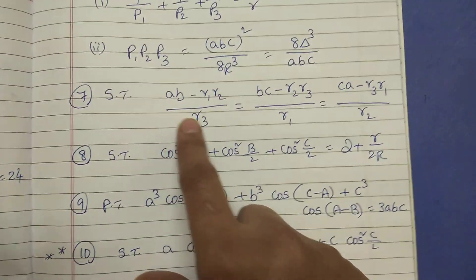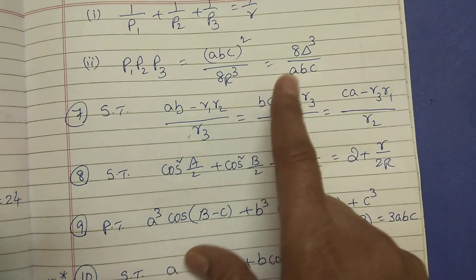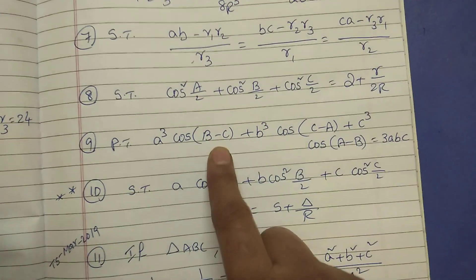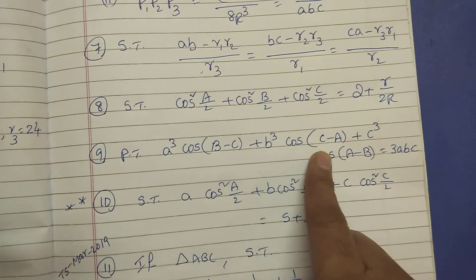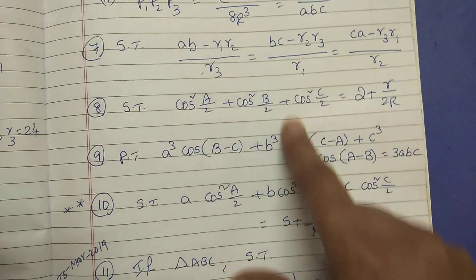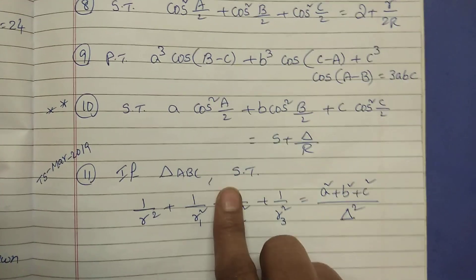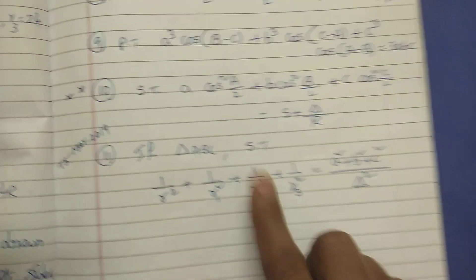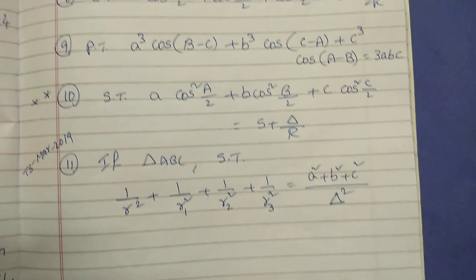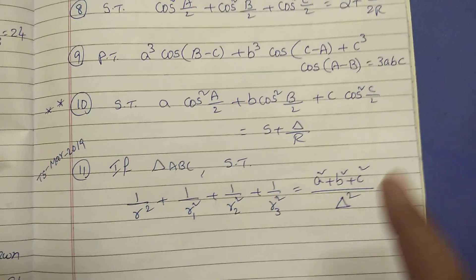Next, seventh one — you have to do that. If you have a 10th grade you can check. This is 2nd grade, you can check. 1 by R1 squared plus 1 by R2 squared plus 1 by R3 squared equals this procedure.